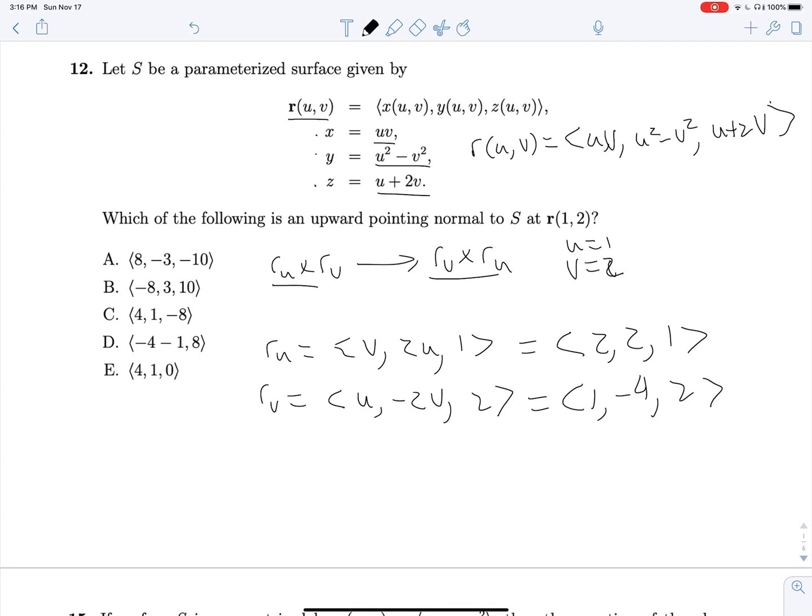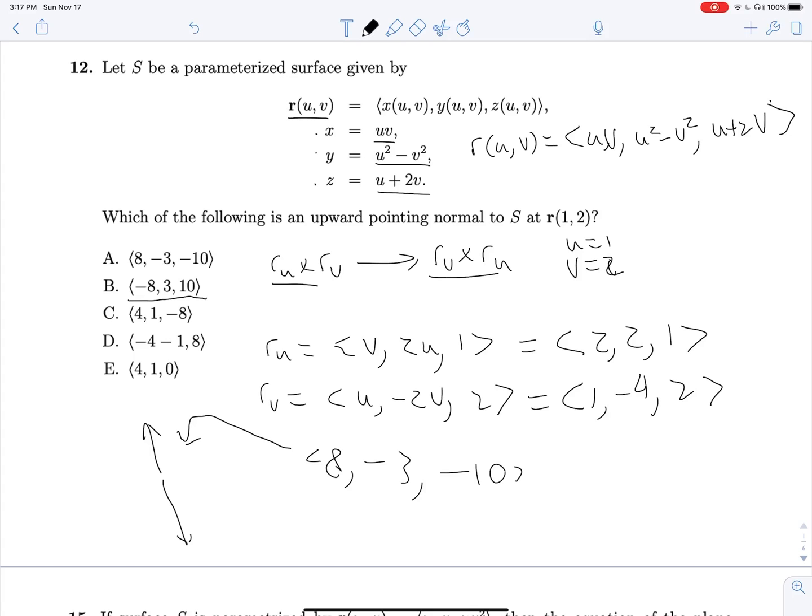So now we can do our cross product, and we will get 8 comma negative 3 comma negative 10. And we look up here, and we see that is not any of our answer choices, but we also see that negative 8 comma 3 comma 10, let's say this vector right here, is this guy. Well, answer choice B will just be its negation. So flip all the signs, we get the other possible vector that we could have found. And really, if we'd wanted to find this, all we could have done was crossed this in a different order.